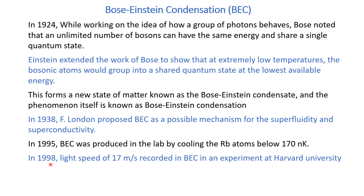There were experiments to study the properties of the Bose-Einstein condensate in 1998 and 1999. In one such experiment at Harvard University, it was noted that the speed of light is extremely reduced in the Bose-Einstein condensate — equal to only 17 meters per second, which is an extremely low speed for light.